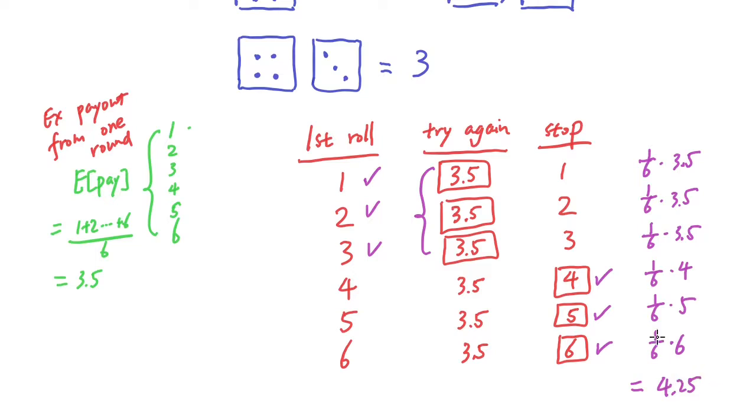So definitely, compared to when you have only one round to play, you expect to make 3.5. But when you get two rounds to play, and if you got a 1, 2, and 3, you would try again. And when you get a 4, 5, 6, you stick with that. You stop and stick with those pay. You're able to enhance your final payout to be 4.25. Thank you.